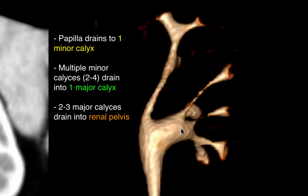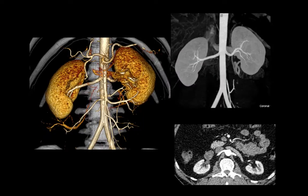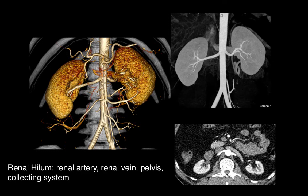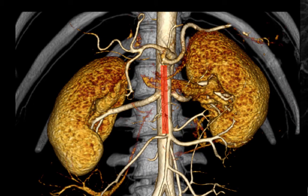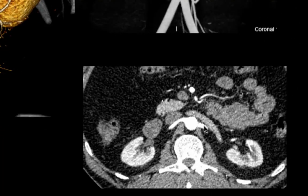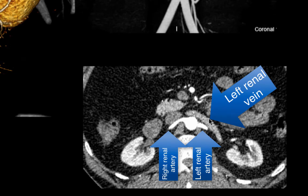The major calyxes, of which there are typically two to three, drain into the renal pelvis, which then drains into the ureter. The renal hilum is the medial-most aspect of either kidney and contains the renal artery that supplies the kidney, the renal vein that drains it, as well as the pelvis and collecting system. Each kidney generally has one renal artery. The renal artery typically arises posterior to the takeoff of the superior mesenteric artery at about the L1-L2 vertebral body level, and arises posteriorly with respect to the renal veins.